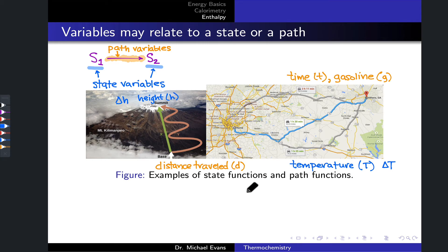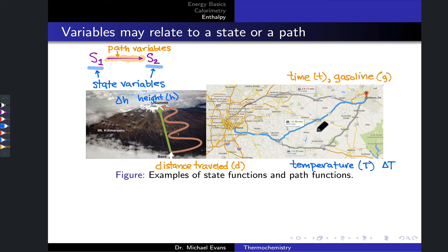Hopefully this gives you a sense intuitively of a state variable versus a path variable. A state variable depends only on the positions and velocities of particles within a system in a particular state — it has nothing to do with how the system got into that state or where it's headed. Path variables cannot be ascribed to individual states and are entirely dependent on the specific details of the path taken from the initial to the final state. In calculating path variables, we often need to use calculus — we need to add up infinitesimal changes. For example, determining gasoline consumption or total distance from Atlanta to Athens involves doing an integral over the entire path. We generally won't do that math in introductory chemistry, but in advanced physical chemistry courses, you absolutely will.